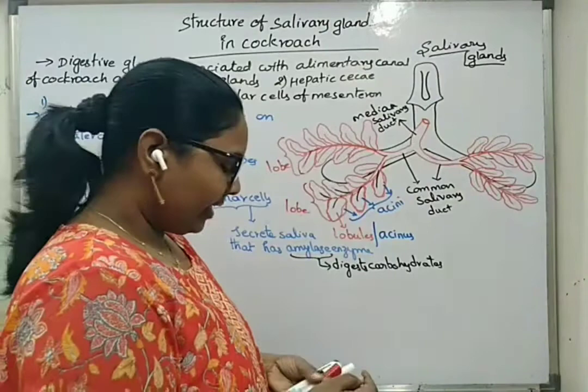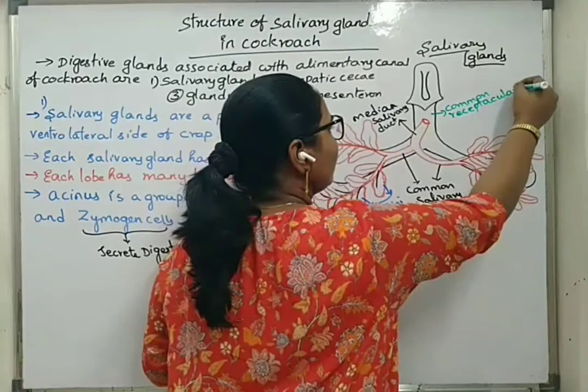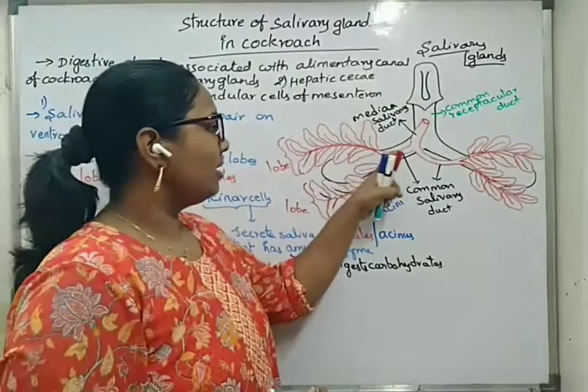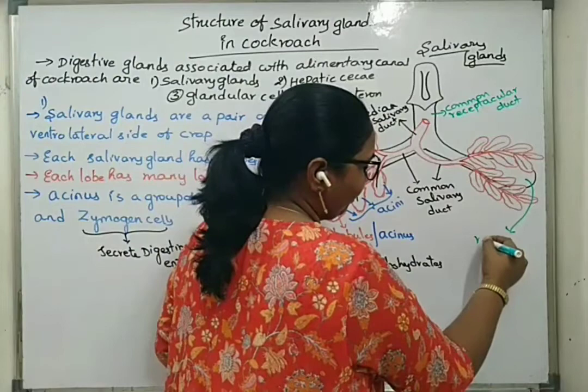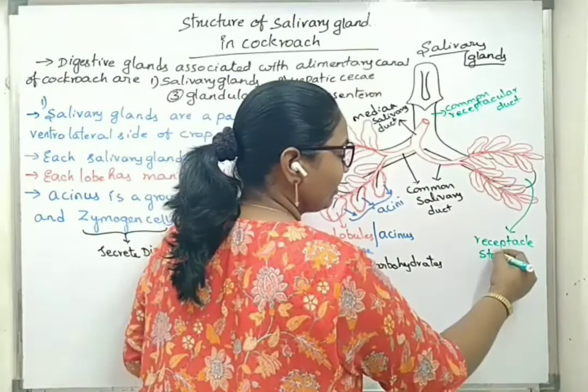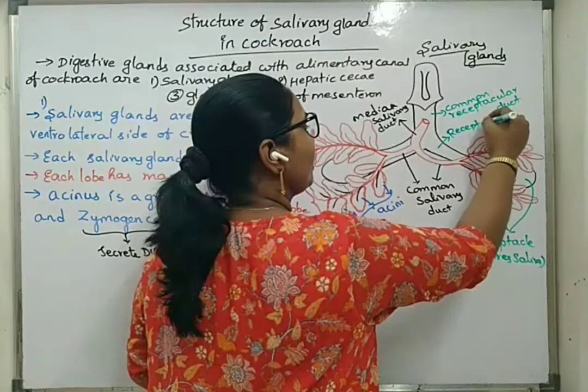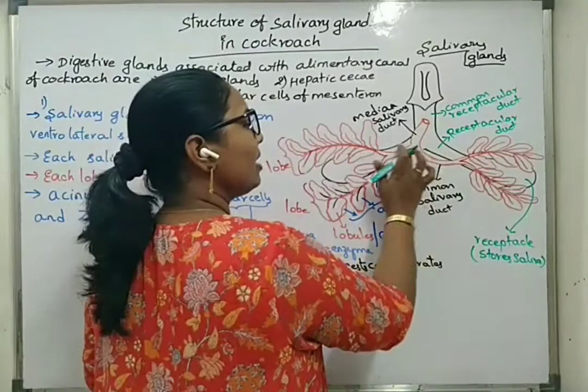This median salivary duct opens into a common receptacular duct. Between the two lobes, there is one large structure called the receptacle. The receptacle stores saliva; it is also called the reservoir. Two receptacle ducts open into the common receptacular duct.